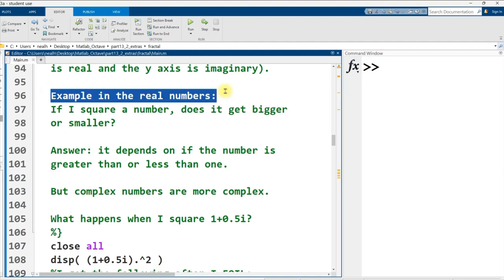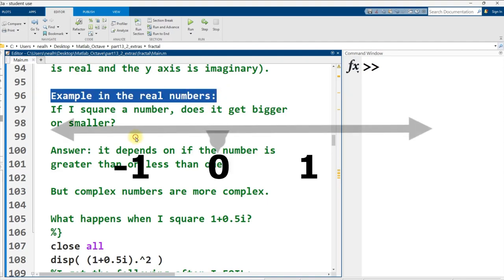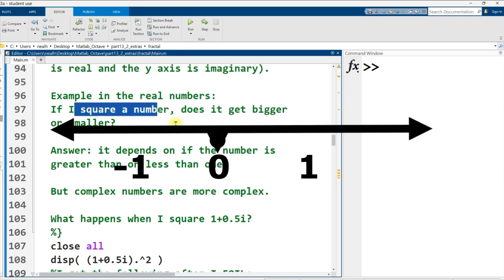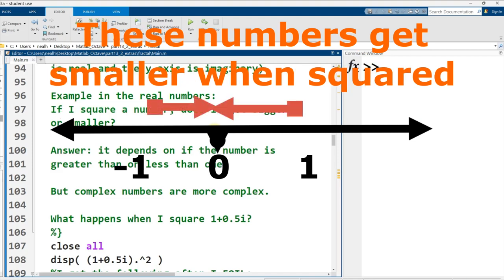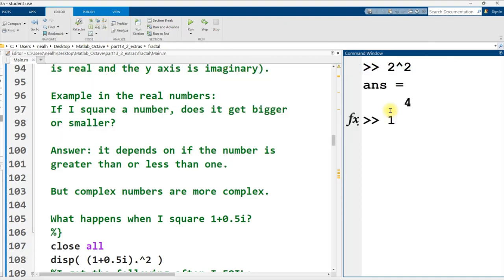Let's look at a simpler example first. Imagine I'm just in the real numbers and I have a number line. I take a number on the real number line and I square it. Does it get bigger or smaller? If your number has a larger magnitude than 1 or negative 1 and you square it, then it has an increasingly large magnitude. If the number is less than 1 and we square it, then it gets smaller.